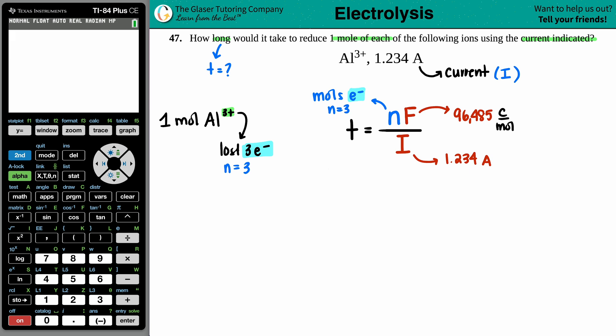Now let's just plug in and solve. T equals, we'll put that there. We have two values on the top, one value on the bottom. I'm going to put in Faraday's constant first, 96,485, divided by the amp, 1.234. And now we know that the moles is going to be three.